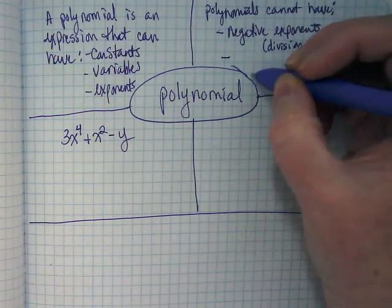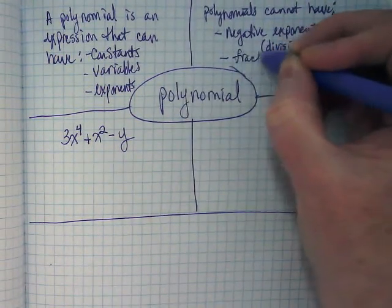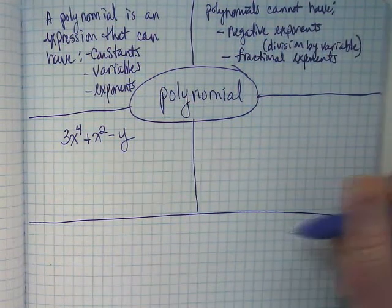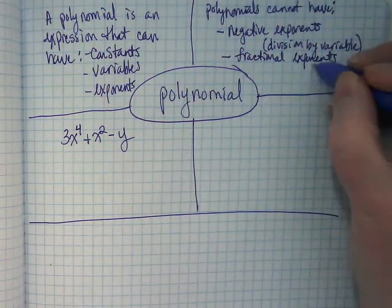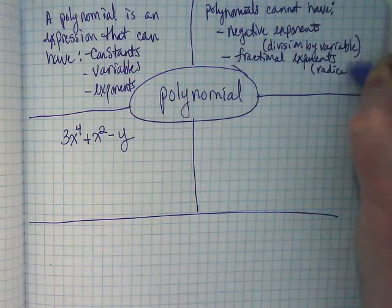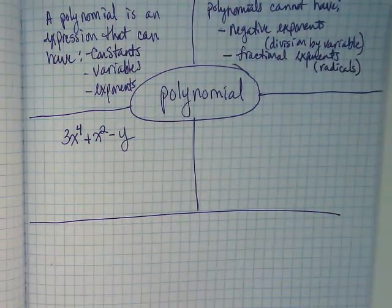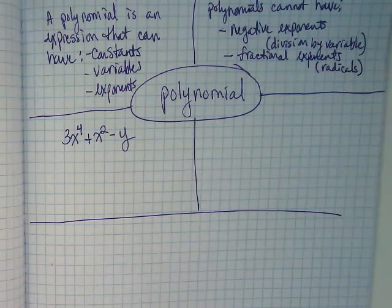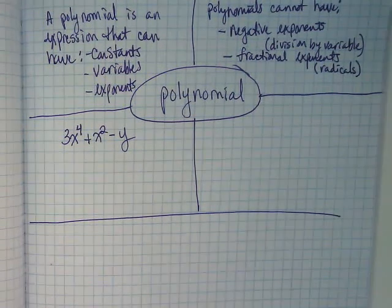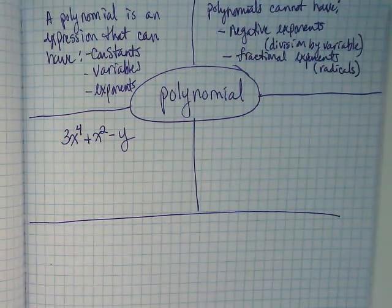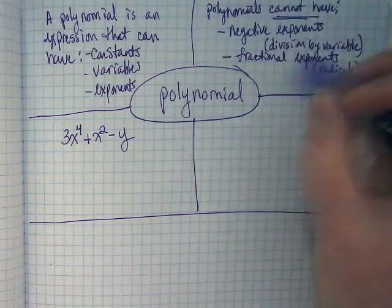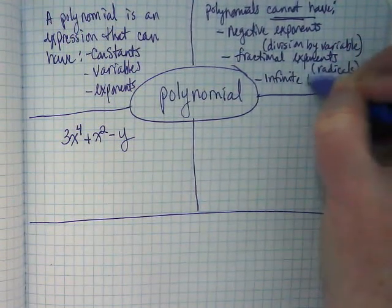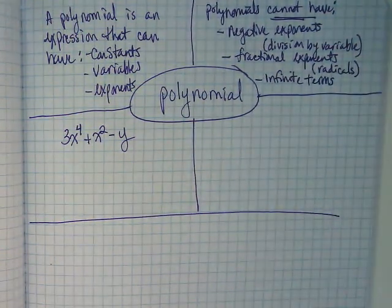Polynomials also do not have fractional exponents, which can sometimes be notated as radicals. Radicals are basically things with a square root kind of notation. Polynomials cannot have infinite terms. You will know the number of terms in your polynomial. It's a definite number.